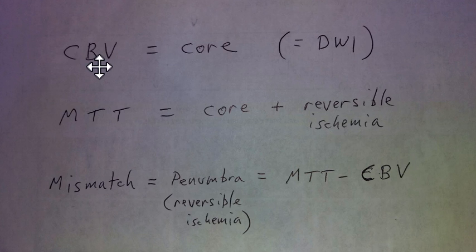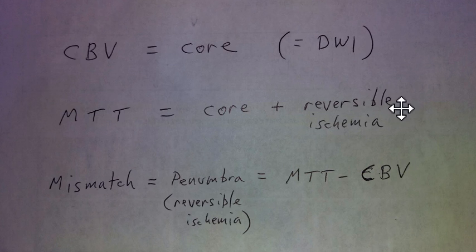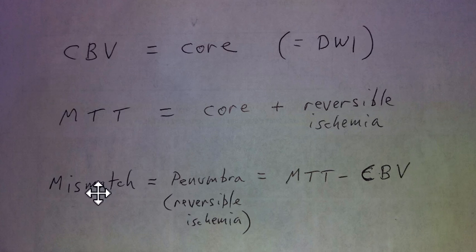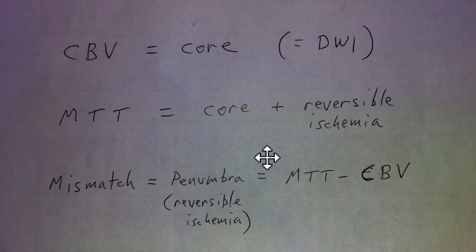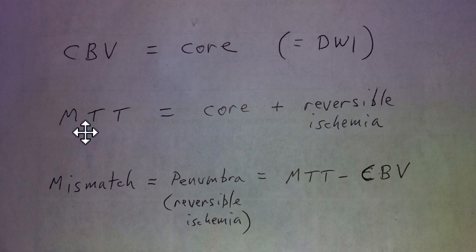That is what the CBV tells you. Then you look at MTT, and that is a combination of any core infarct present plus any surrounding reversible ischemia or hypoperfusion. What we're going to do is compare CBV to MTT, and we're looking for mismatch — also called penumbra — or any potentially reversible ischemia. It's the difference between the MTT and the CBV. CBV equals core infarct, and MTT is core plus surrounding ischemia.